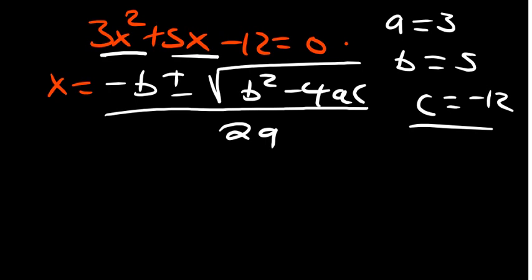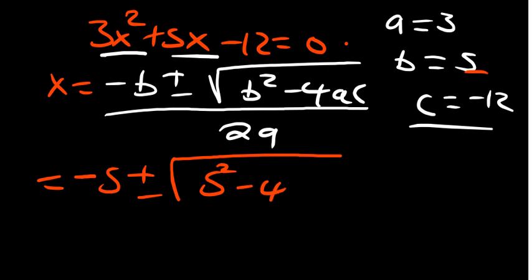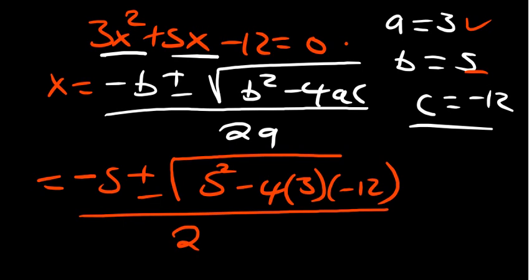So we have the negative of b. So our b is positive, so it would be negative 5, plus or minus. What is our b squared? Our b is 5, so it's 5 squared, minus 4. Our a is 3. And our c is minus 12. Divided by 2a. Our a is 3.